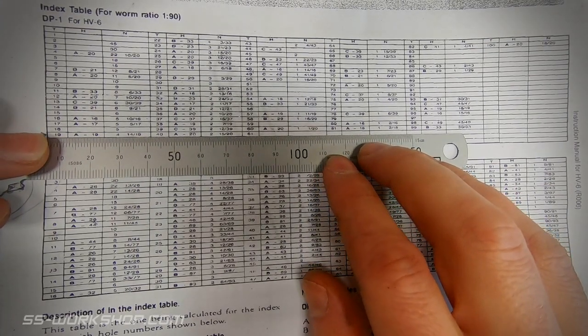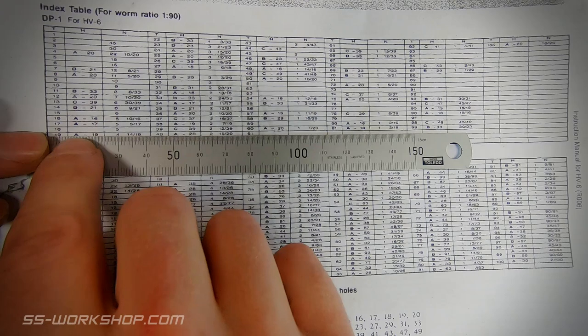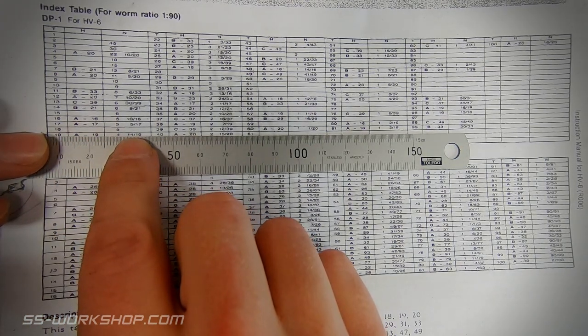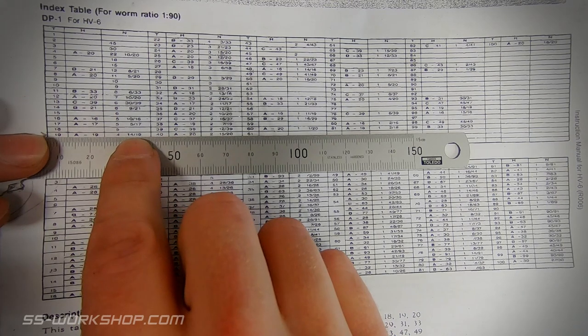Today I want 19 holes so the table tells me I need 19 divisions which is on plate A and I'll need to rotate the crank handle four times and 14 of the 19 divisions.